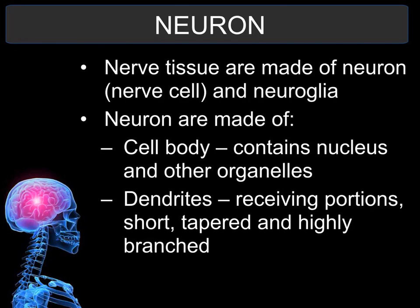Neurons are made up of several structures. The main area is the cell body, which contains the nucleus and other organelles. Attached to the cell body are structures called projections called dendrites, and they are like the antennas or receiving portions of the neuron.